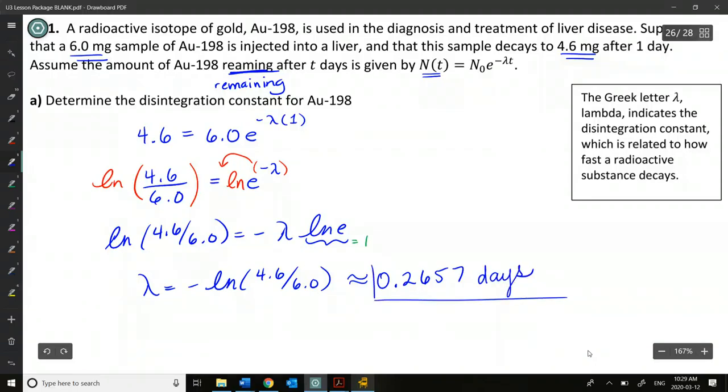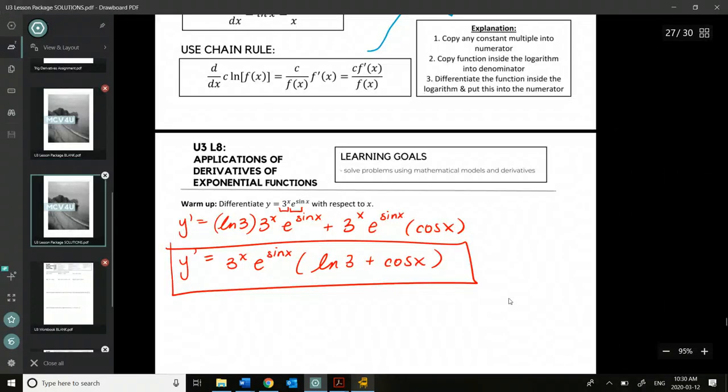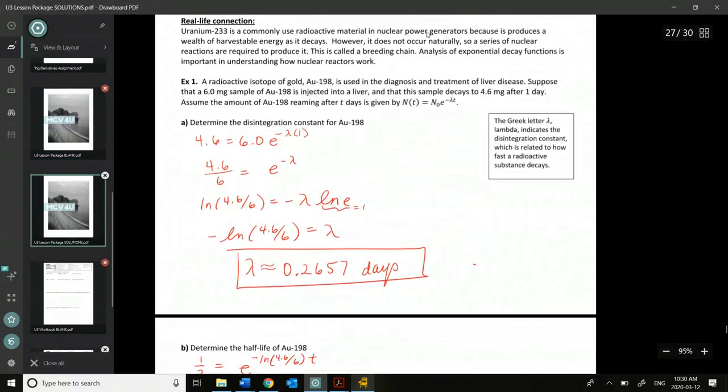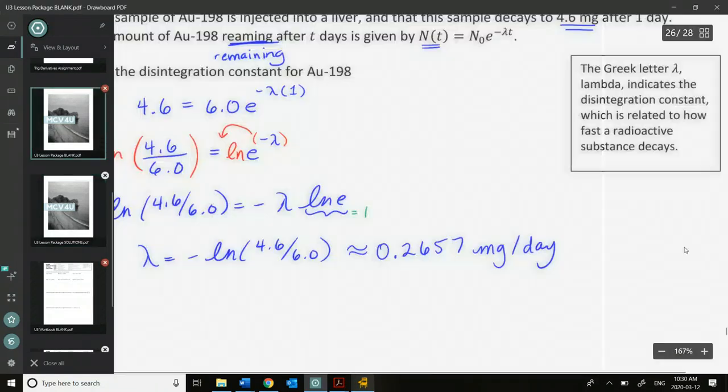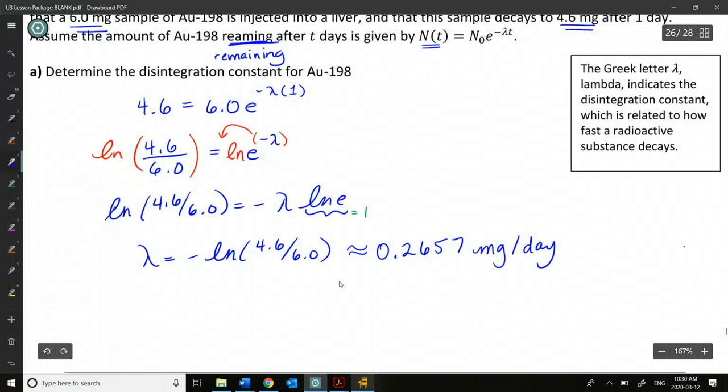Oh yeah, yeah, yeah, because you multiply it by the negative. Yes, correct. 0.2657. Okay, and if we entered in time in days, then your disintegration constant is talking about how quickly the radioactive substance decays, so this is in days as well. Is it not like more pairs per day? Yeah. I think it is actually. I think you're right.